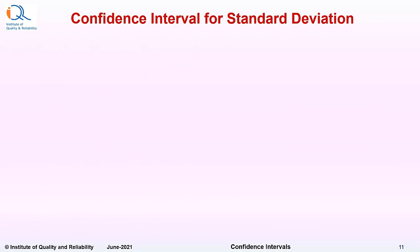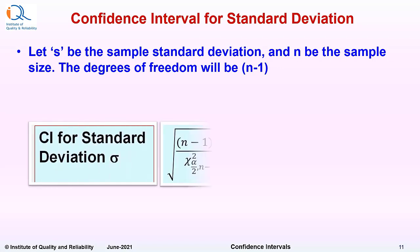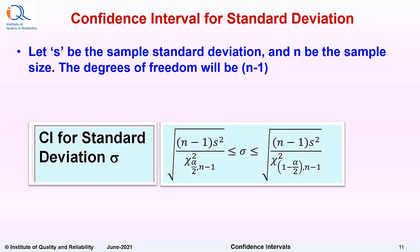Let us now go into specific details of calculations. Let s be the sample standard deviation and n be the sample size. The degrees of freedom then will be n minus 1. Confidence interval for population standard deviation sigma will be given by this formula.